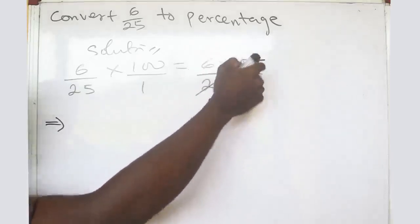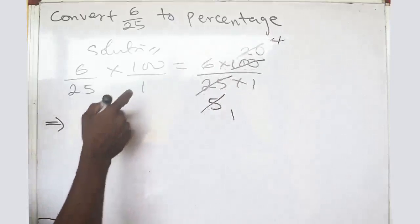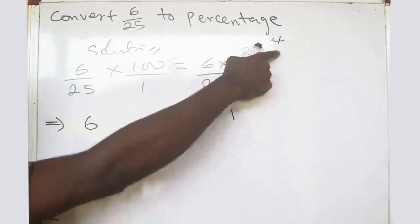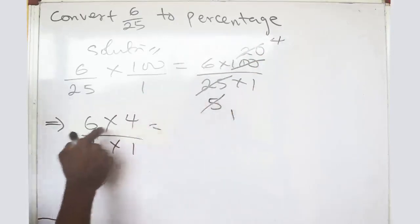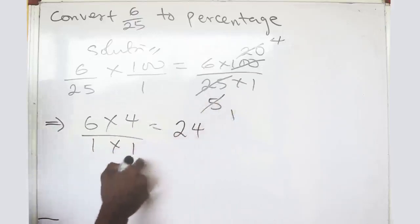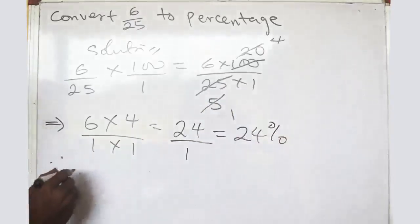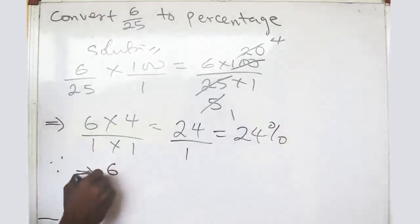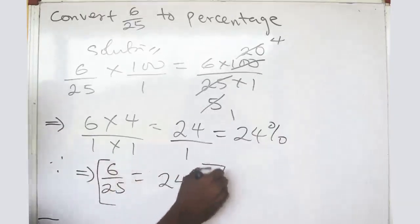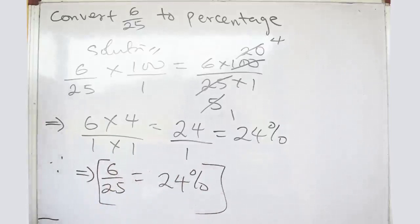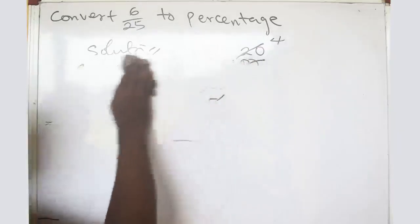Five can divide twenty-five to give you five, and five can divide one hundred to give you twenty. So we are left with six times four divided by one times one, which is twenty-four. Therefore six over twenty-five is equal to twenty-four percent. When they say math is difficult — there is absolutely no big deal to this.